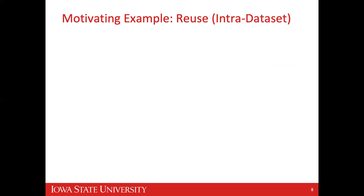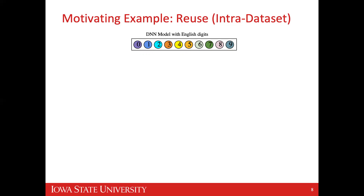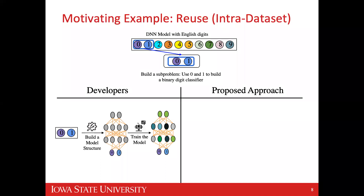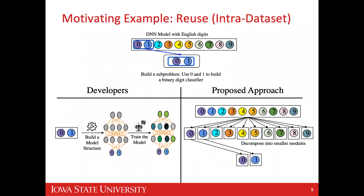Here we give a couple of motivating examples. Take the English digit dataset — if we want to build a binary digit classifier using only 0 and 1, a developer would partition the dataset and build a model. Instead, we are proposing to decompose the DNN model into small components and reuse the modules for 0 and 1 to build a binary classifier.